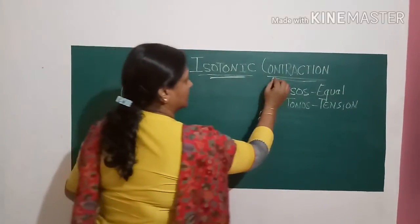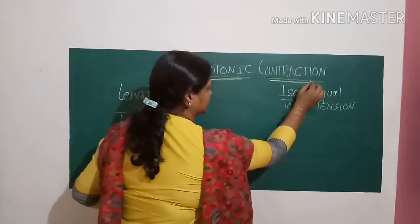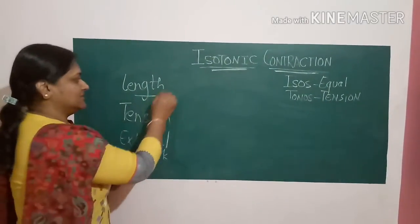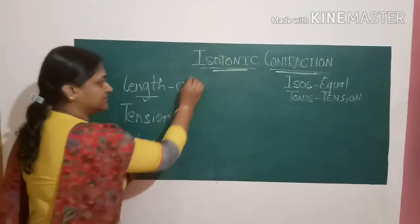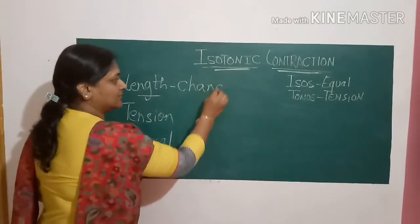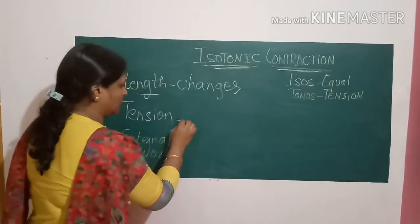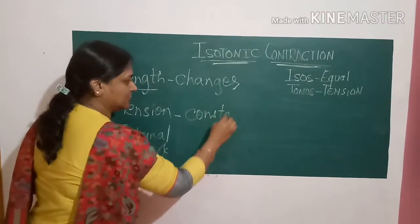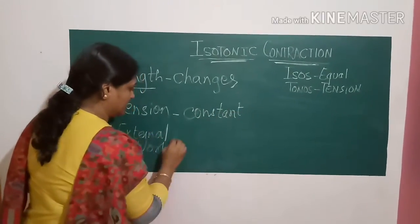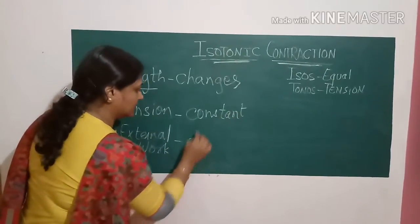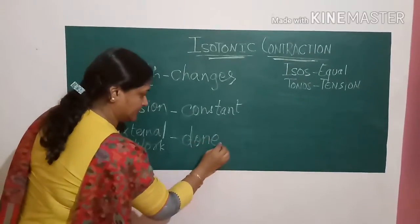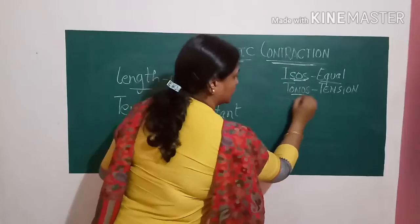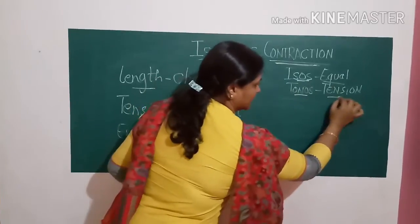Isotonic contraction is where length changes at constant tension and external work is done. 'Isos' means equal, 'tonos' means tension.